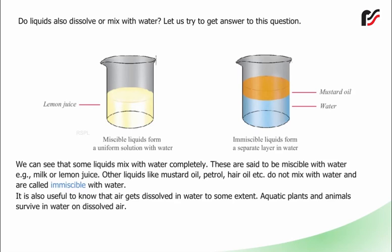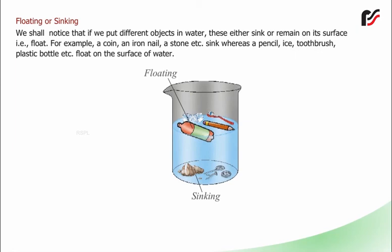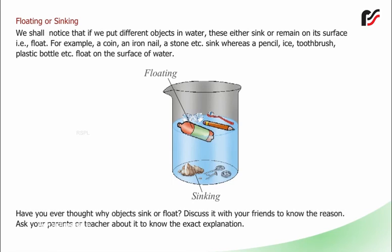Floating or Sinking: If we put different objects in water, these either sink or remain on the surface — i.e. float. For example, a coin, an iron nail, a stone, etc. sink, whereas a pencil, a toothbrush, a plastic bottle, etc. float on the surface of water. Have you ever thought why objects sink or float? Discuss it with your friends and ask your parents or teacher to know the exact explanation.